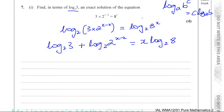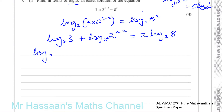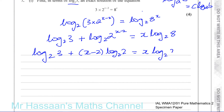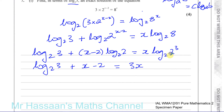Similarly on the left side, I can apply the same power law. So I've got log to the base 2 of 3, plus x minus 2 times log to the base 2 of 2. Now log to the base 2 of 2 becomes 1. And on the right, I can rewrite log to the base 2 of 8 as log to the base 2 of 2 cubed, because 8 is 2 cubed. So the left becomes log to the base 2 of 3, plus x minus 2.